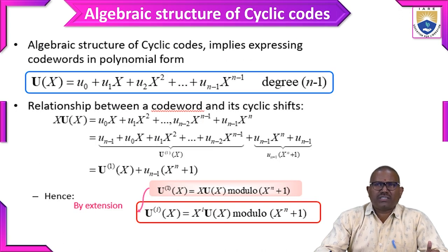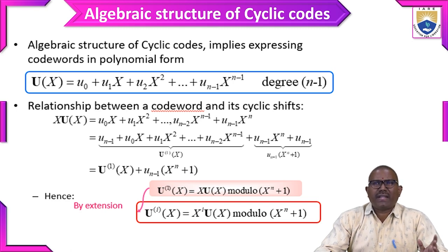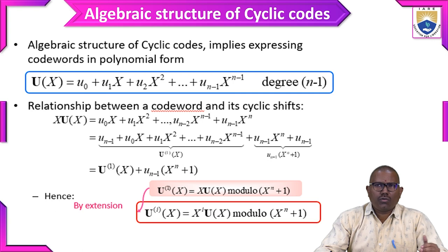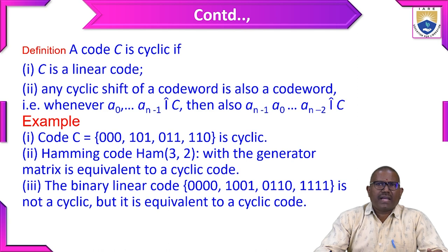This is the algebraic structure of cyclic codes. Here u(x) equals u₀ plus u₁x plus u₂x² plus … plus u_{n-1}x^{n-1}, where the degree is n minus 1. In the definition, a code C is cyclic if C is a linear code and any cyclic shift of a codeword is also a codeword.